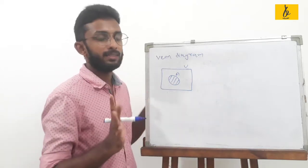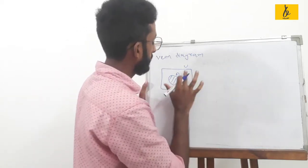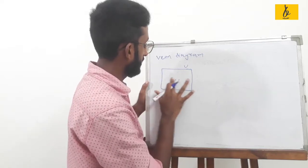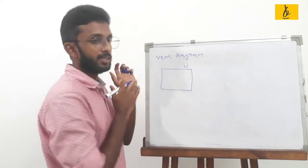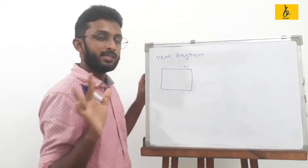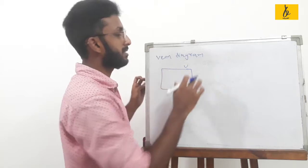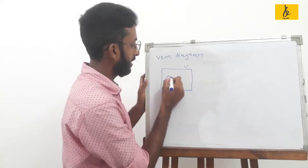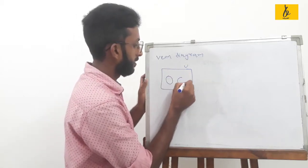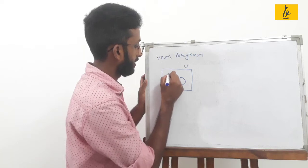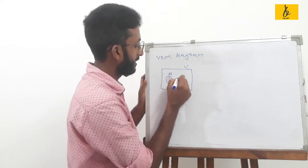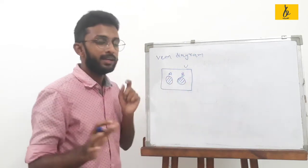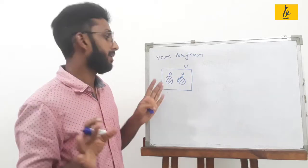A and B represent two sets. I have two independent sets: this set is A, and this set is B.